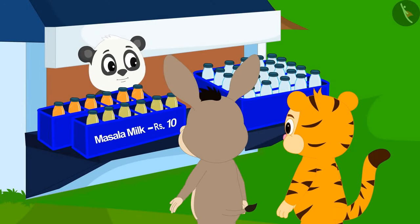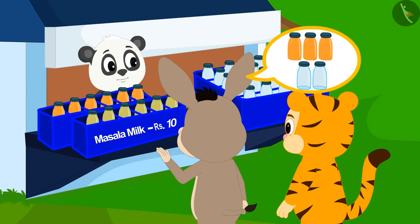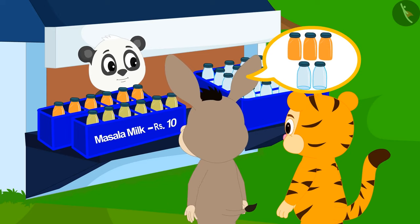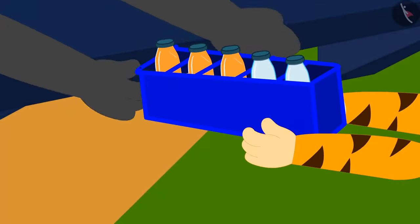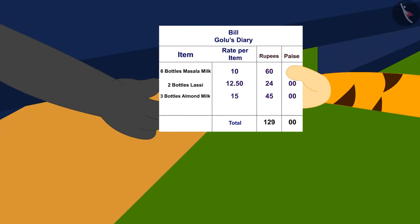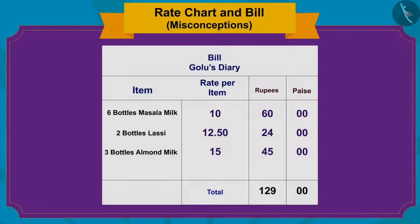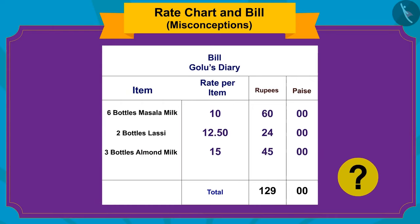Now Bhoala and Sher Khan want to carry two bottles of lassi and three bottles of almond milk for their friends. Golu gave them all the bottles and also made a bill at the same time. Children, can you look at this bill and tell if Golu has made it correctly?